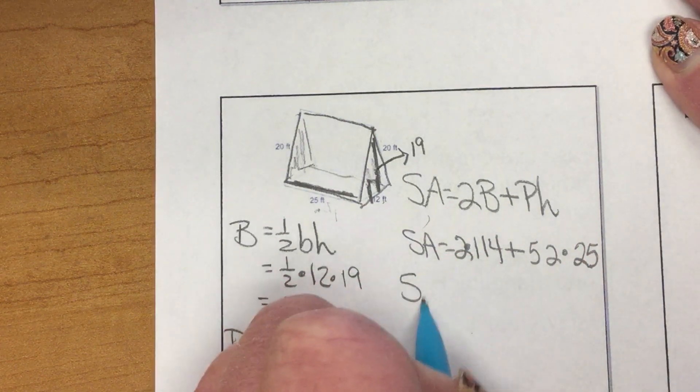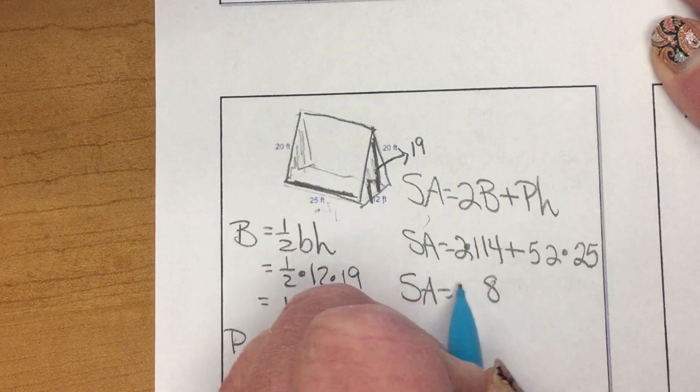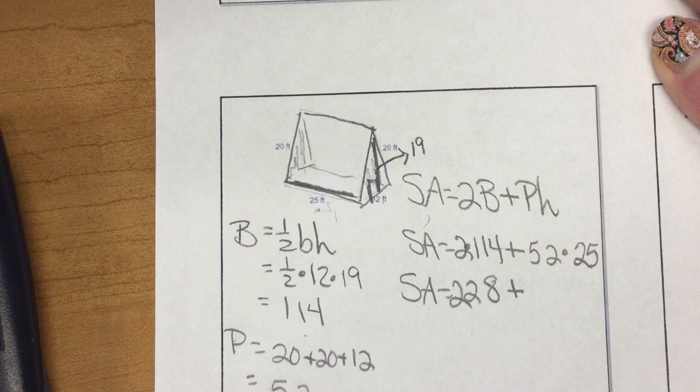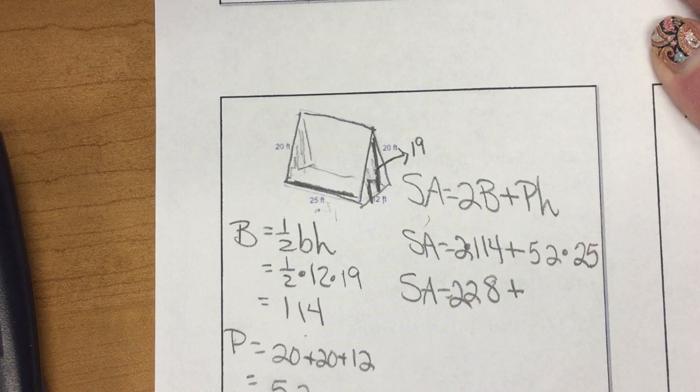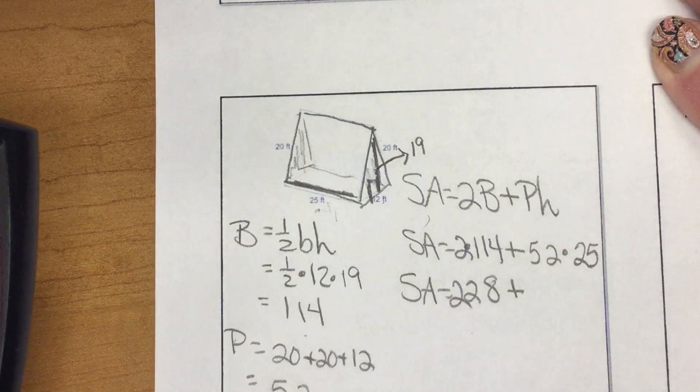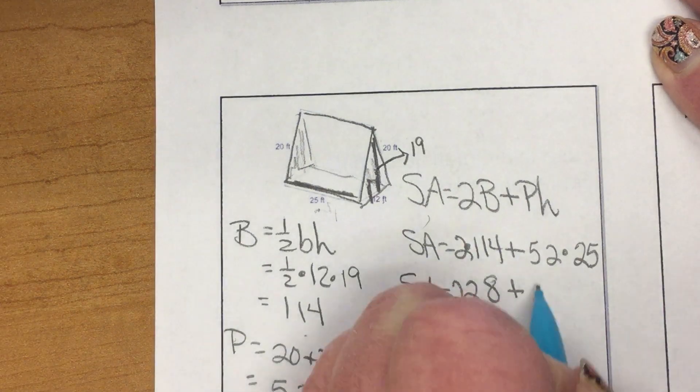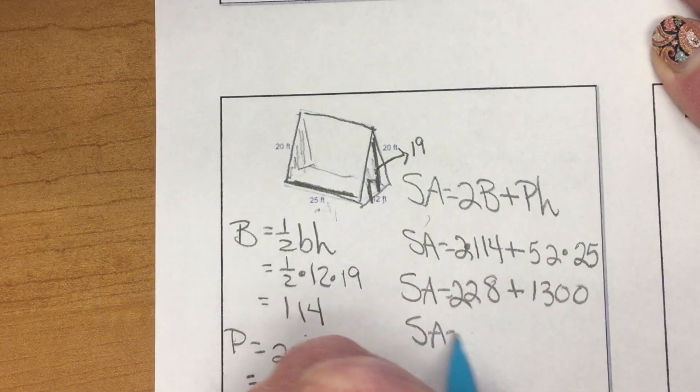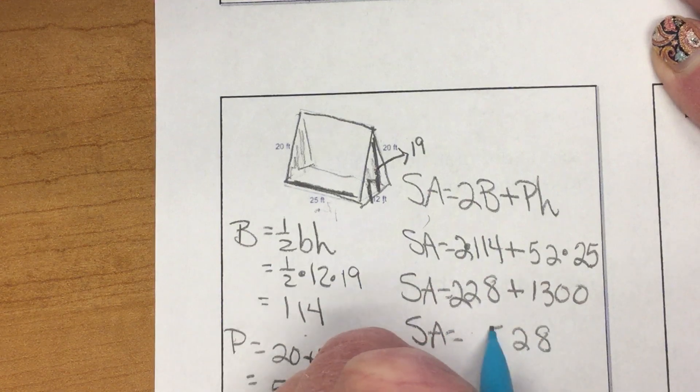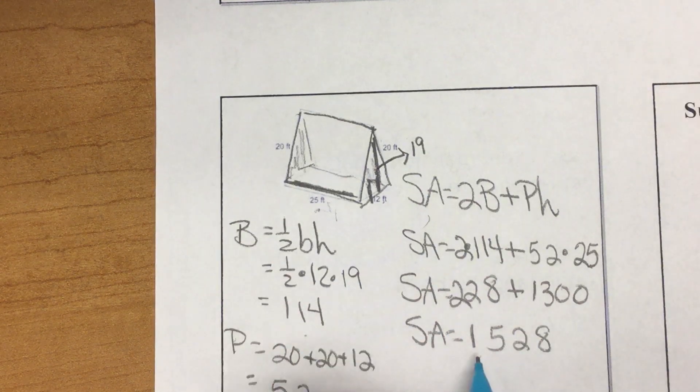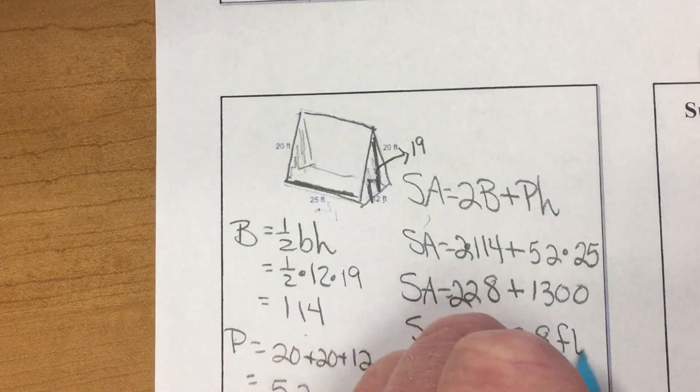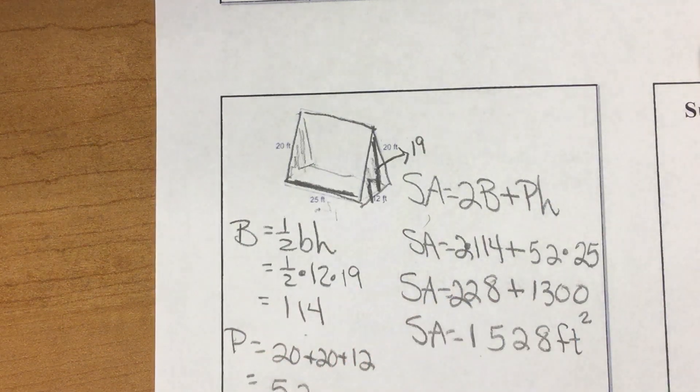So, surface area is 228 plus 52 times 25, 1,300. Add those together, 1,528, and our label is feet, so it is feet to the second power.